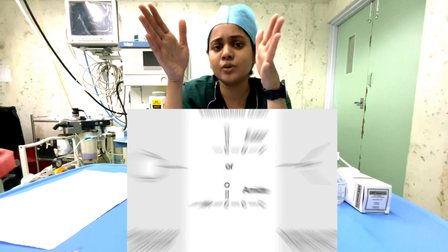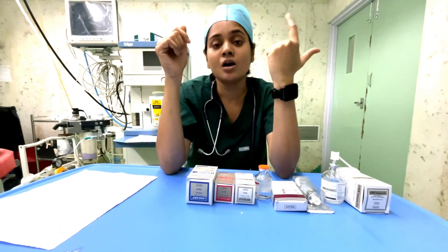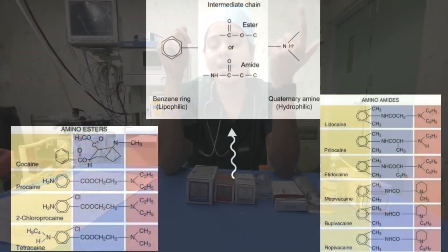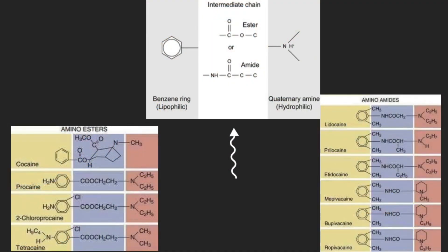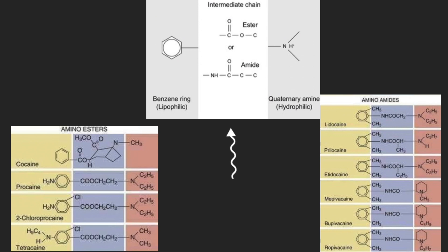In amino esters, we have procaine, chloroprocaine, and tetracaine. While in amino amides, we have lignocaine, bupivacaine, ropivacaine, levobupivacaine, mepivacaine, and prilocaine.